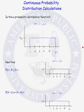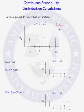Is the area under the curve equal to 1? We have a rectangle, so the area equals base times height. The length of the base is 5 and the height is 1/5, so this area does equal 1, and we do have a probability distribution.